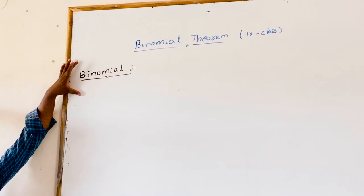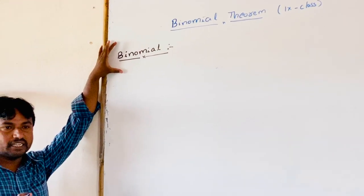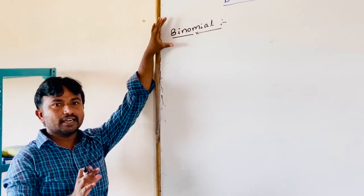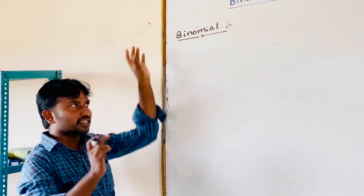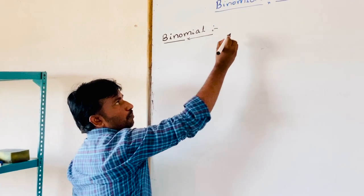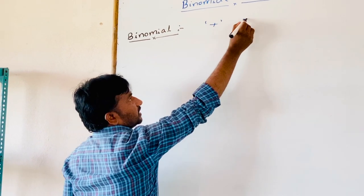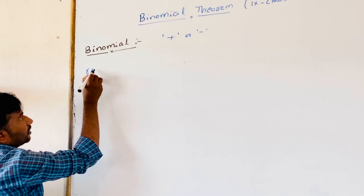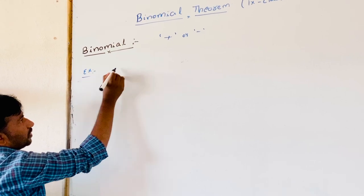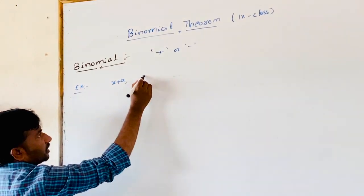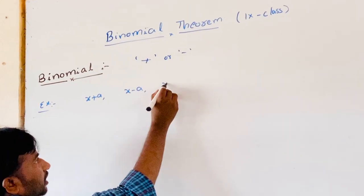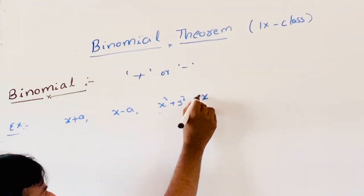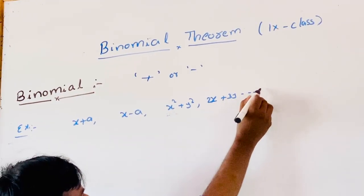What is the binomial? Binomial means two terms connected by either plus or minus signs. For example: x plus a, x minus a, h square plus y square, 2x plus 3y, and so on.